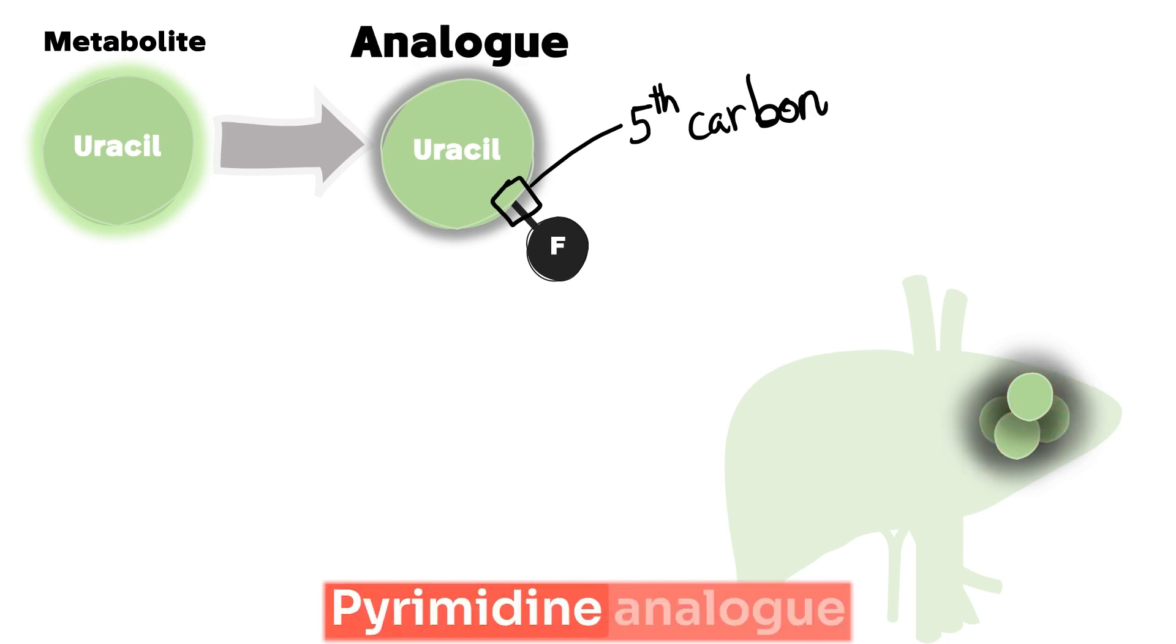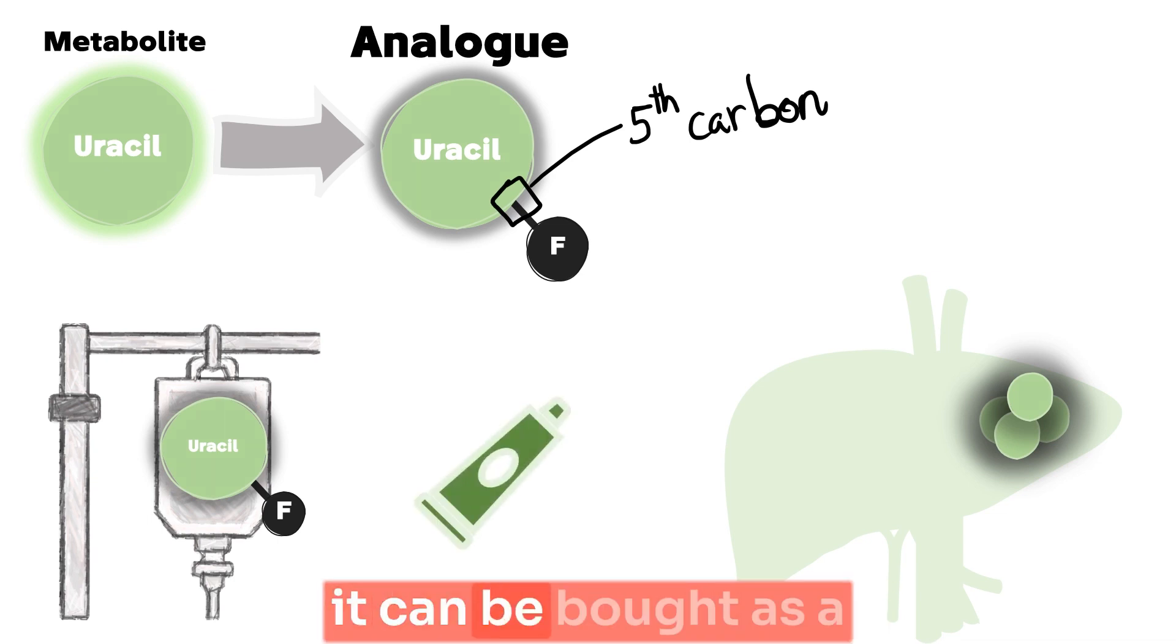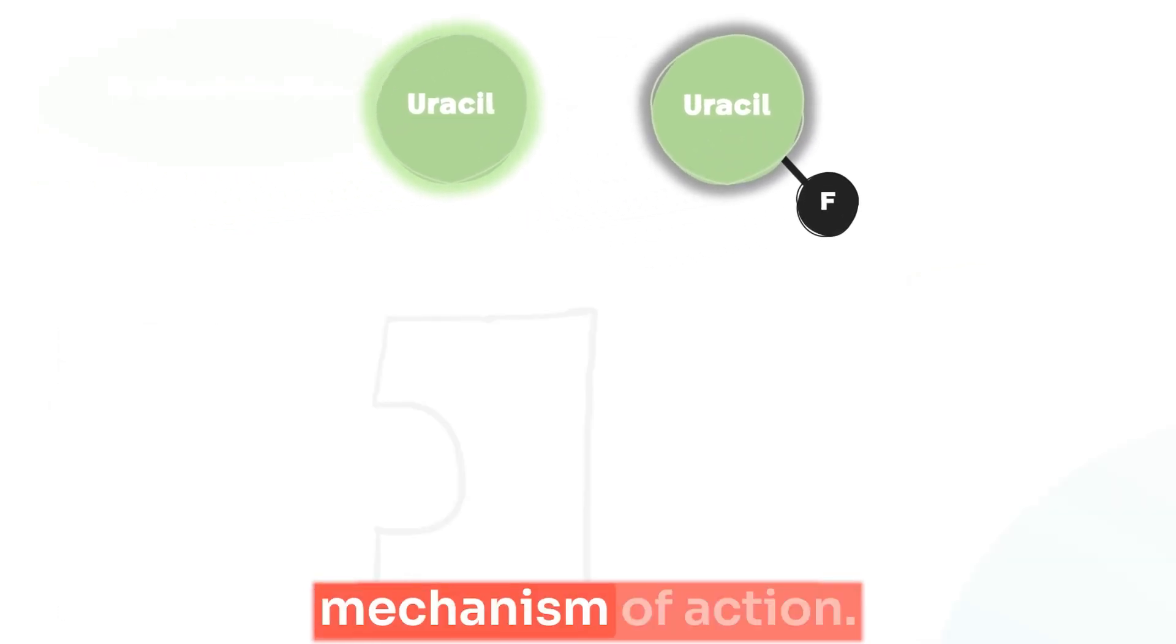The first pyrimidine analog discovered in history that's still widely used. And surprisingly enough, it can be bought as a topical cream for certain types of skin cancer. Let's jump into the mechanism of action.